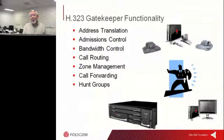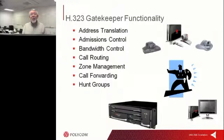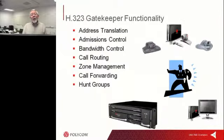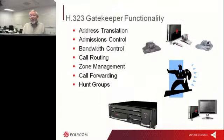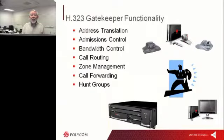If there isn't enough bandwidth available for the whole call, the DMA gatekeeper will actually ask the endpoint to downspeed its call if any bandwidth is available. Some gatekeepers are very binary — if you ask for a meg and there's only half a meg, it'll tell you a meg of bandwidth is not available and hang up the call. Polycom's DMA and CMA product lines are advanced in that they will step down and ask for less bandwidth from the endpoint, and typically they can get it.